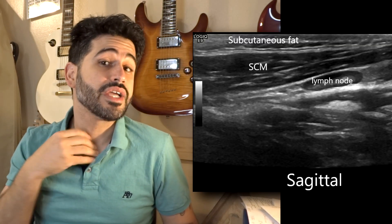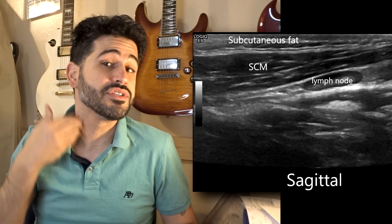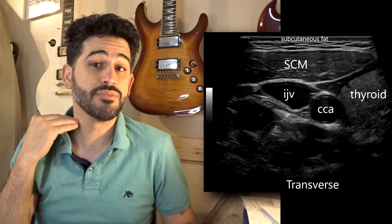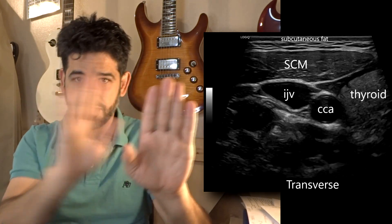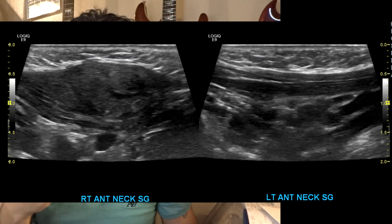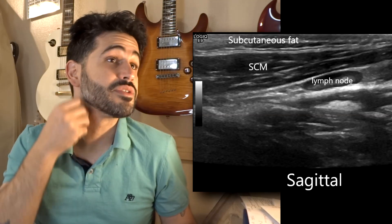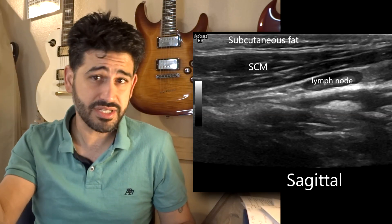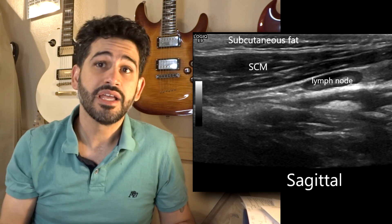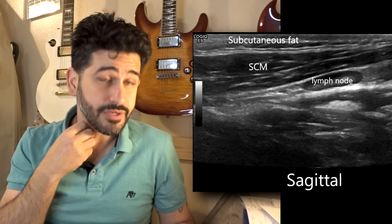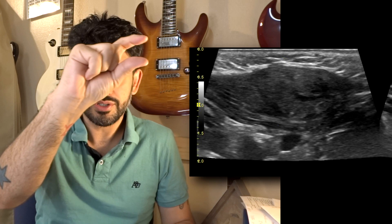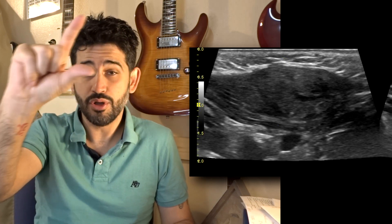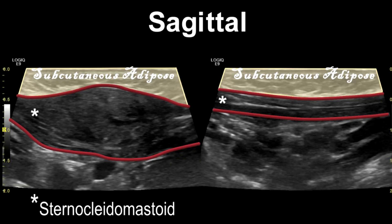You're going to want to take longitudinal and transverse images of both sternocleidomastoid muscles, and also do dual imaging to compare both sides. The normal sternocleidomastoid muscle is going to be very thin and linear, especially in infants. If there's a tumor or fibromatosis coli, you're going to see the tumor taper out and then back in — there's going to be a bulge, and there's also going to be heterogeneous echo texture in the muscle.